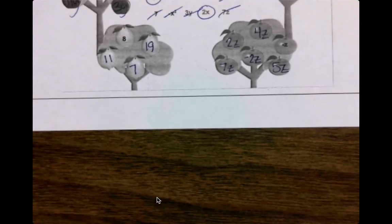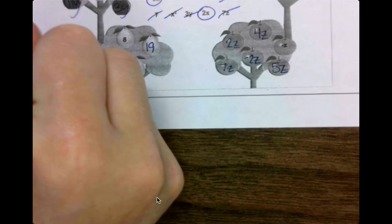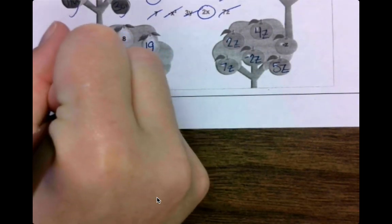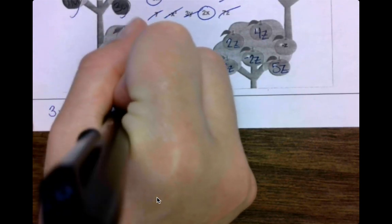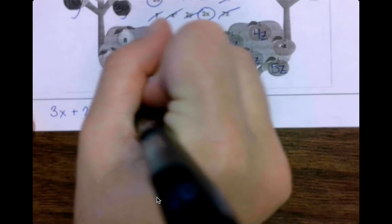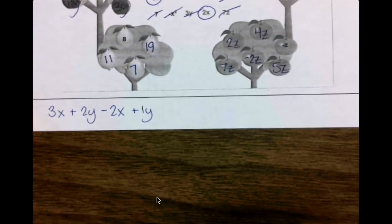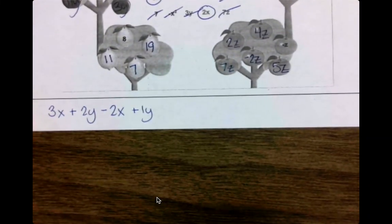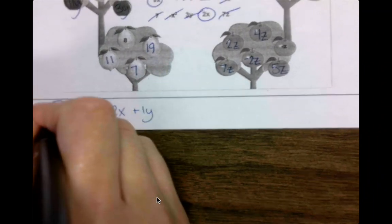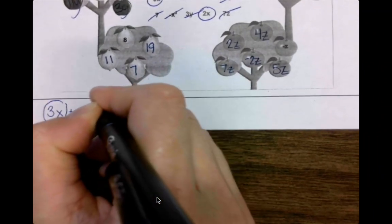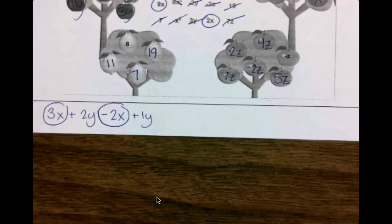I know it's not on here, but I do want to look at what this means. If I have something like 3x plus 2y minus 2x plus 1y, the things that would go in the same tree are the things that can be put together. So this 3x and that minus 2x, those are things that can be put together.